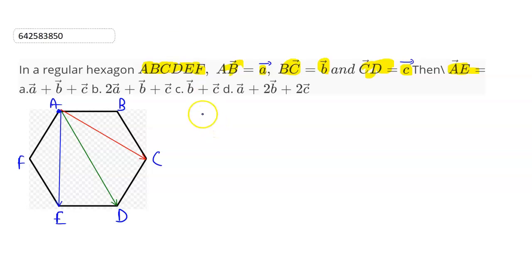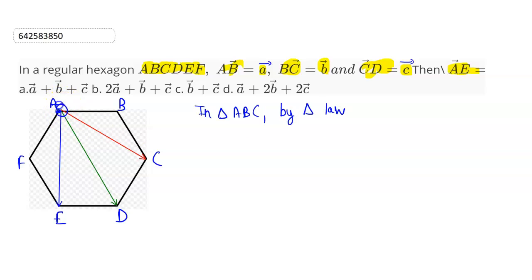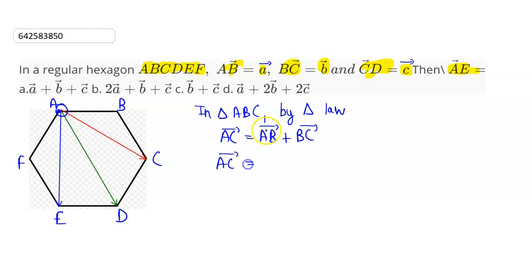In triangle ABC, by the triangular law of vector addition, considering A as the initial point, AC vector is the resultant of AB vector and BC vector. So AC vector can be written as a vector plus b vector, since AB vector is given as a and BC vector is given as b.